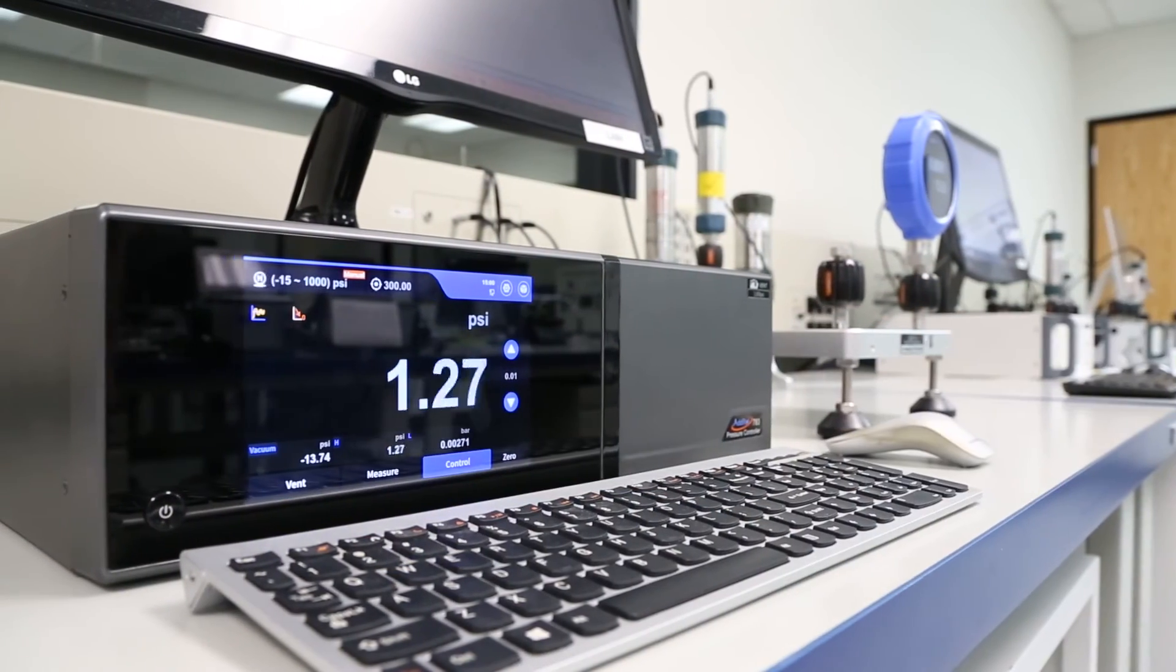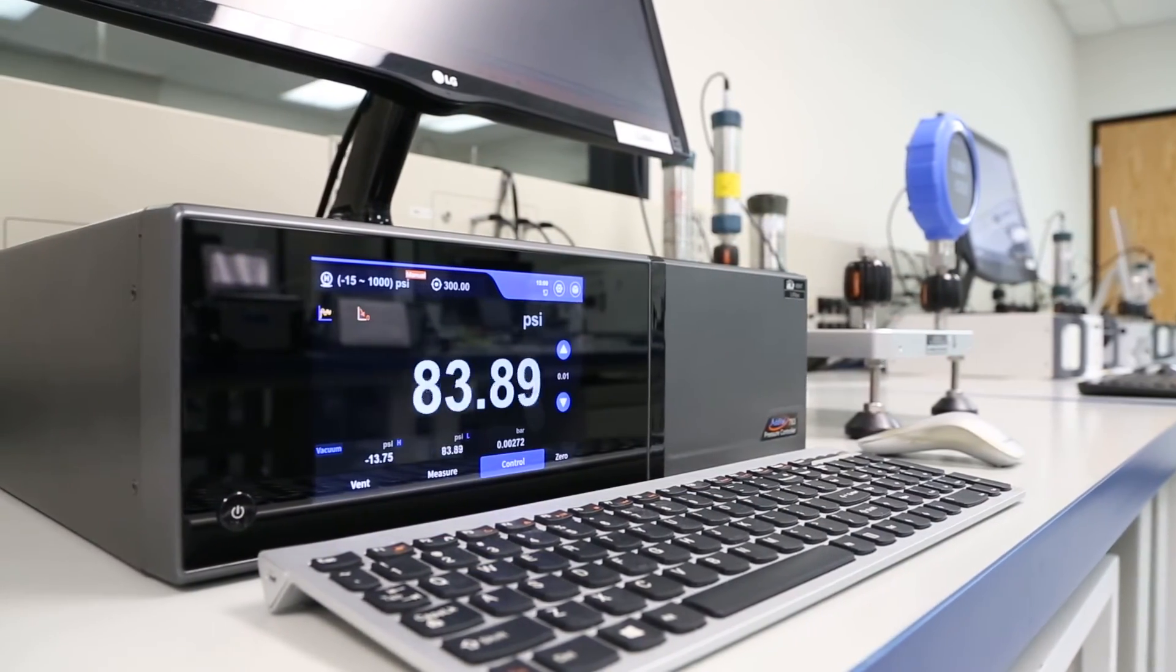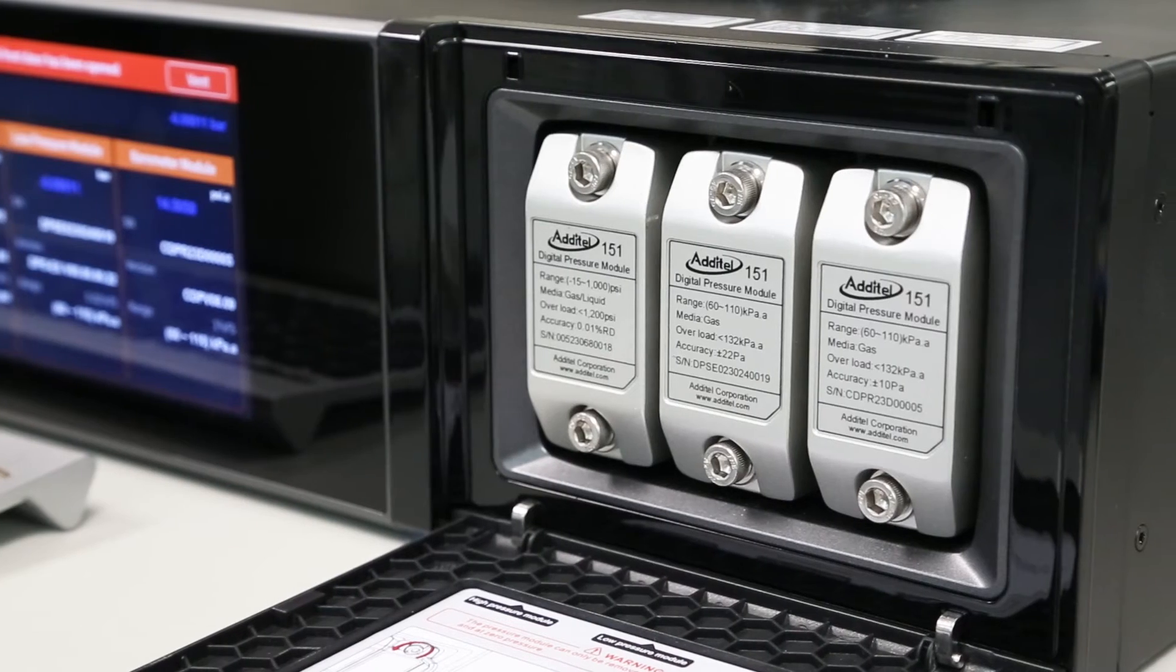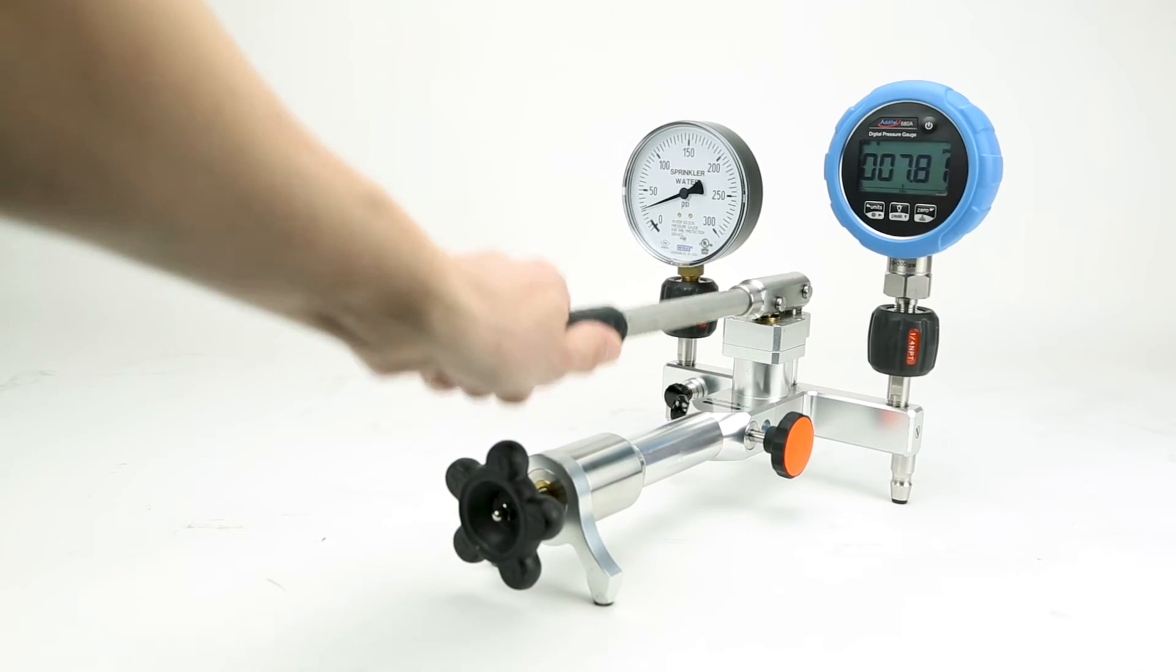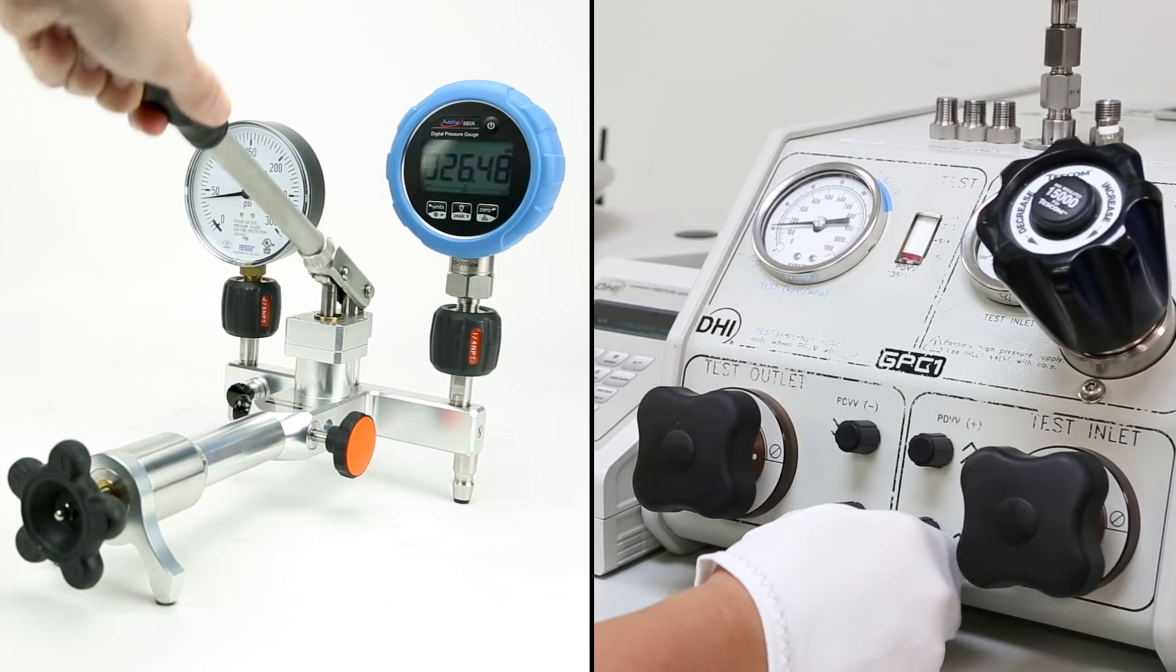Some pressure controllers are able to generate their own pressure and may also have their own reference modules installed. Since calibrating using manual pumps can be very time-consuming, and since pressure controllers and deadweight testers aren't very portable, a good way to meet in the middle is with an automatic calibrator.